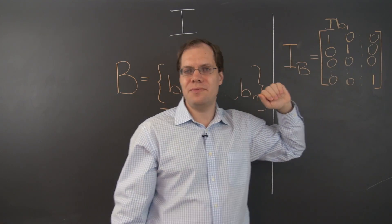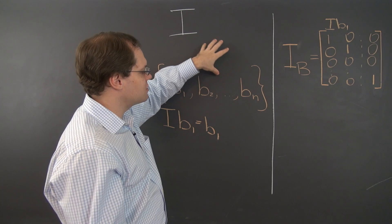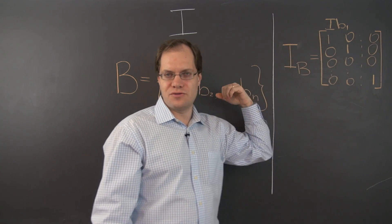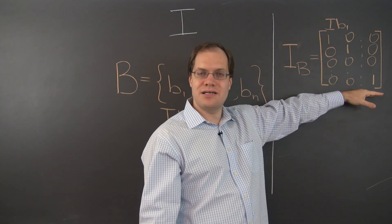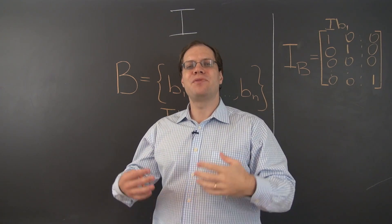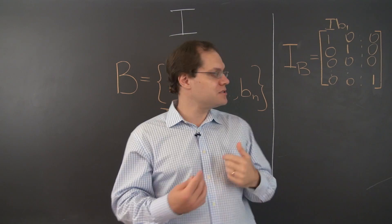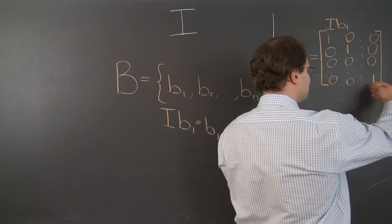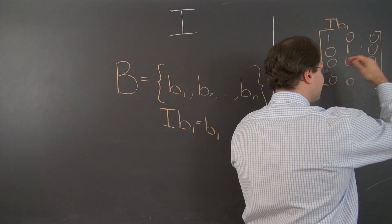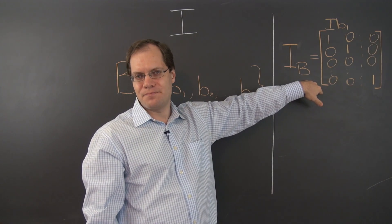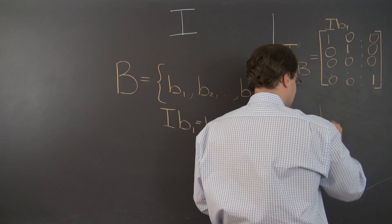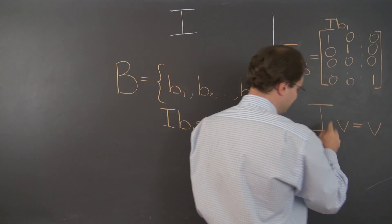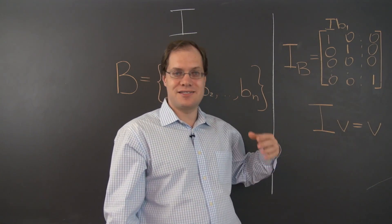There's one more note to make: what we just saw is that the identity transformation is represented by the identity matrix. But the converse is also true — any transformation that's represented by the identity matrix must be the identity transformation. Because if we think about what happens in component space, whatever is the input to this matrix under multiplication, that vector will remain unchanged. I times any vector of components V results in V — that's the definitive property of the identity matrix.